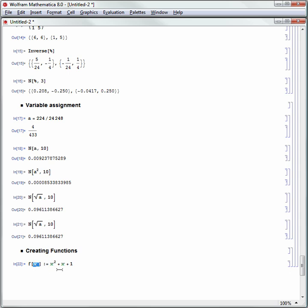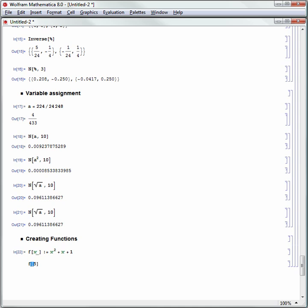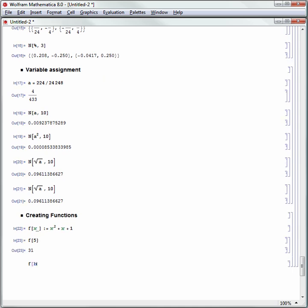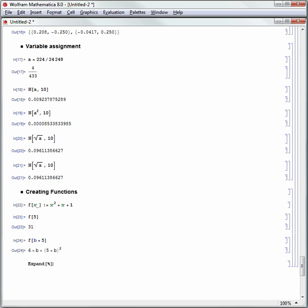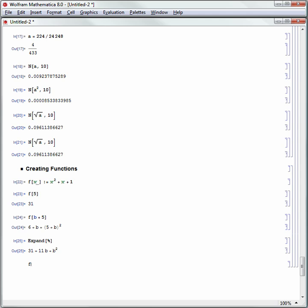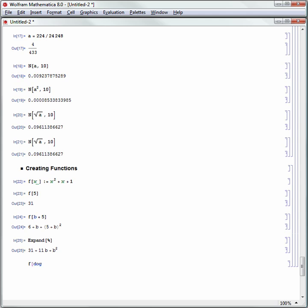So for example, let's say F of 5 and then shift enter. That's 31. Or I can say, what is F of B plus 5? And that is 6 plus B plus quantity 5 plus B squared. Of course, we can expand that. So I say expand that last output and I get 31 plus 11B plus B squared. I can also use the function in some string. So if I say, what is F of dog? For example, dog is just a string, a variable here. And of course, that becomes 1 plus dog plus dog squared.